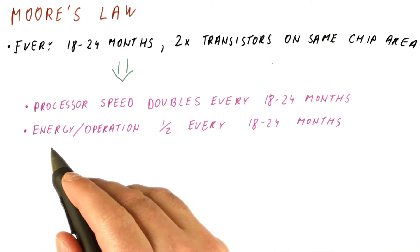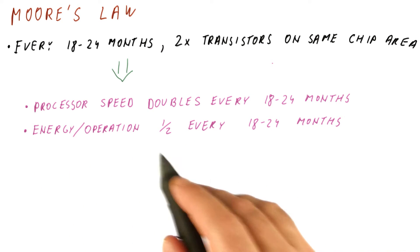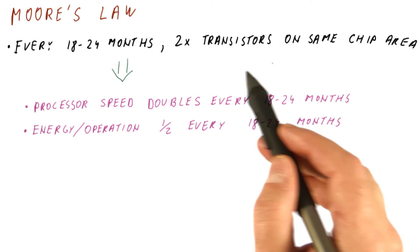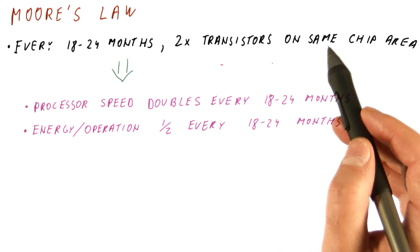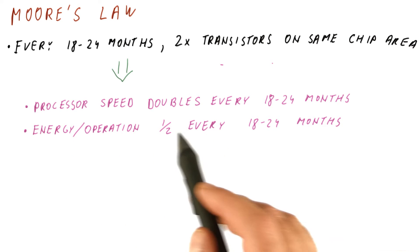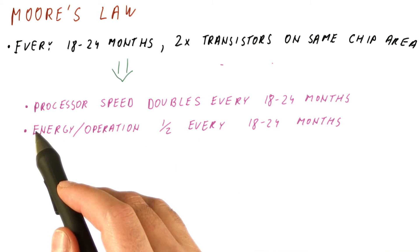We also try to reduce the energy per operation to about half of what it was every 18 to 24 months. Pretty much the transistors are now half the size as they used to be. So we try to translate that into using half as much energy for the operation of the same work.